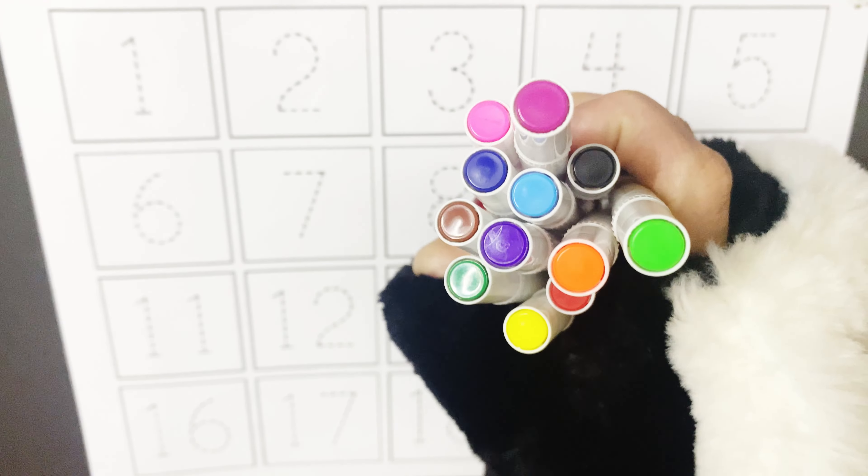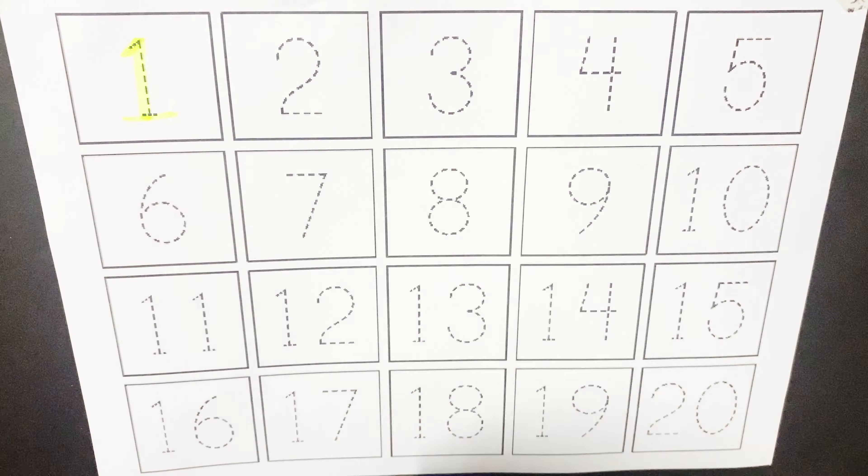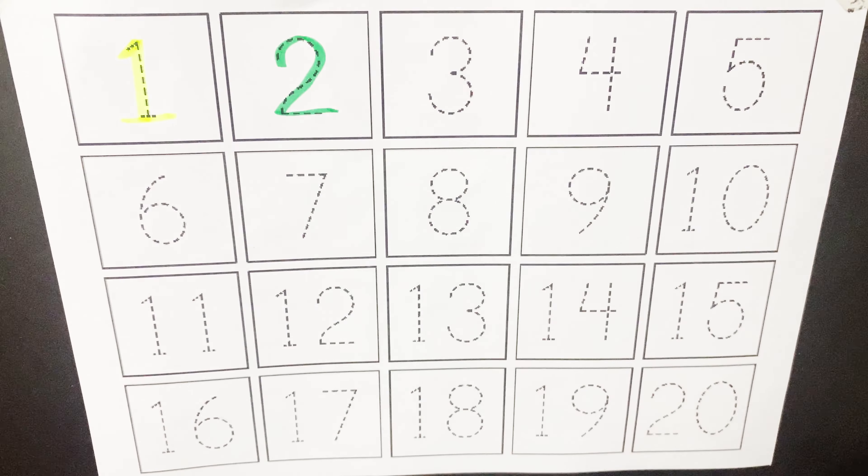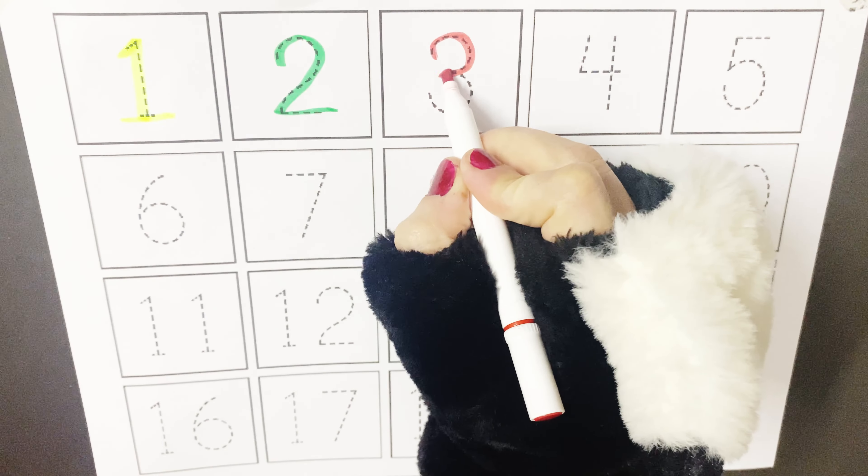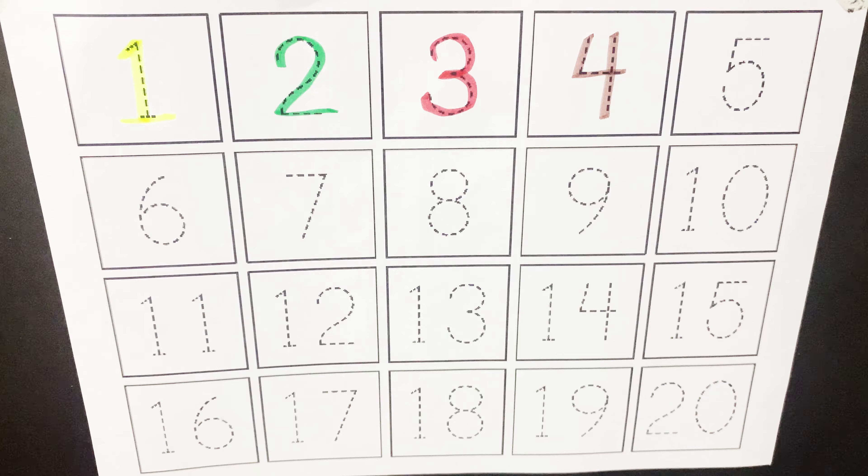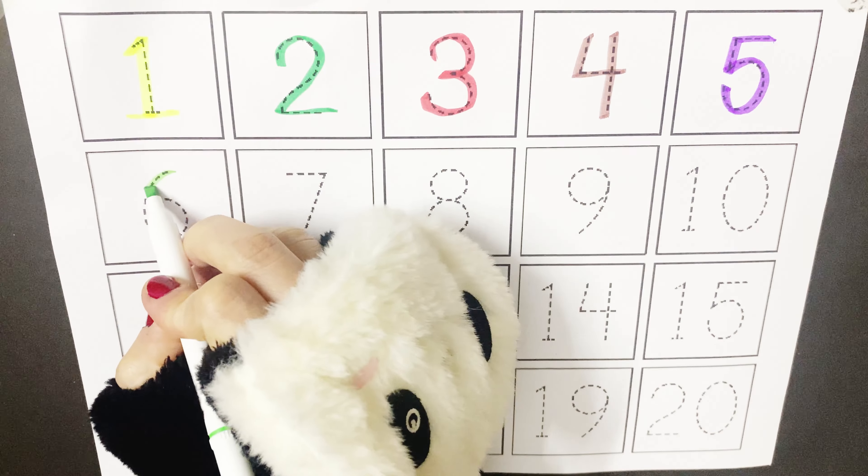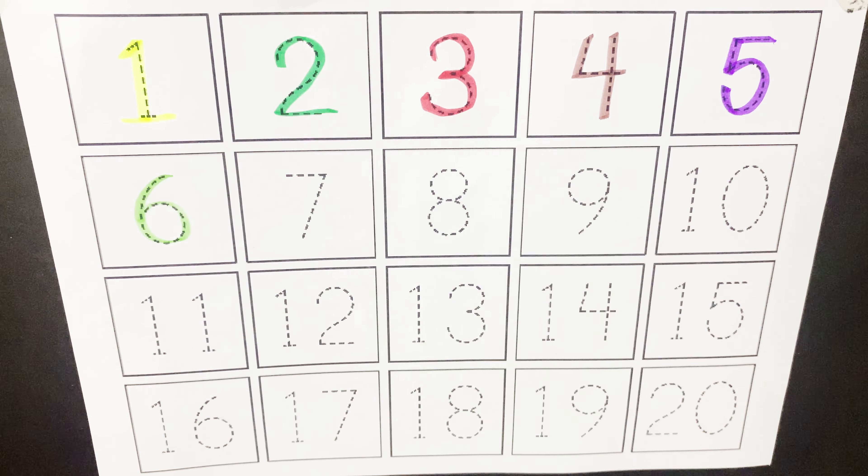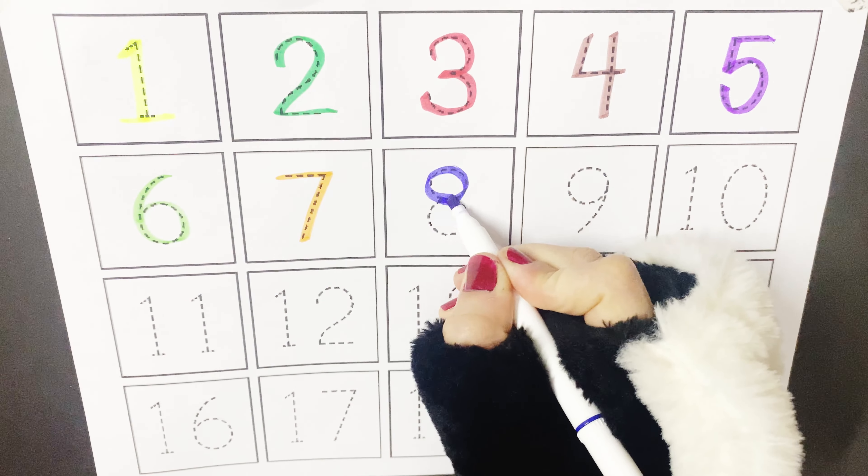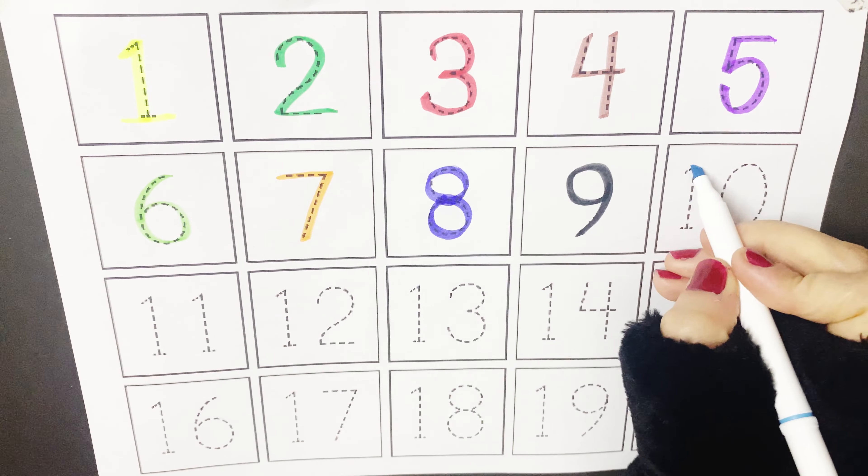So let's start writing numbers from 1 to 20. Let's start with number 1. Say after me. 1, 2, 2, 3, 3, 4, 4, 5, 5, 6, 6, 7, 7, 8, 8, 9, 9, 10.